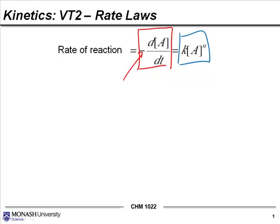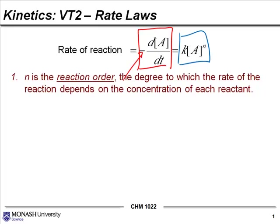I am going to start out by talking about what n is. n is the reaction order, it is the degree to which the rate of the reaction depends on the concentration of each reactant. We will explore this with a few examples.